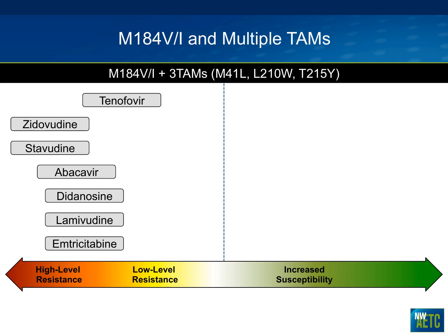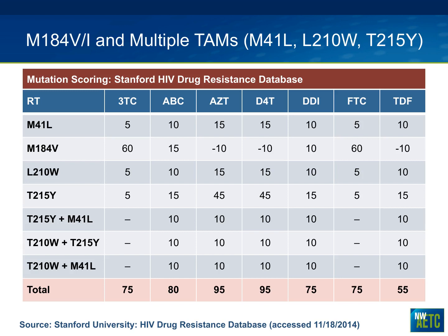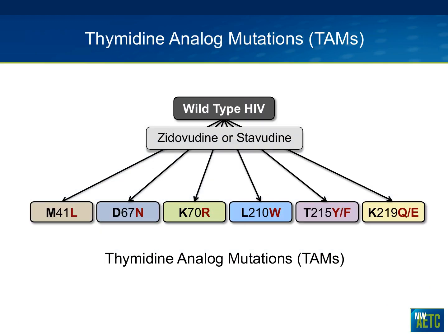If you have an M184V mutation and multiple thymidine analog mutations, the consequences are severe. Essentially everything moves into higher-level resistance. Tenofovir is spared a little, but multiple TAMs plus M184V is a bad scenario. Looking at the Stanford database, the numbers are high across the board, signifying significant antiviral resistance — you are not going to get much out of the NRTI class.